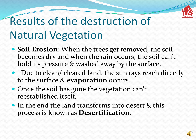Now let's talk about the after-effects of destruction of natural vegetation. Soil erosion is the biggest problem. When trees get removed — remember the Yanomami, who used to do clearing — the soil becomes dry, and when heavy rainfall occurs, the soil cannot hold the pressure of water and is washed away from the surface.